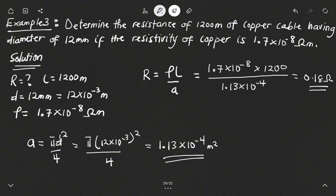Thank you so much for watching. This is how we calculate the resistivity of a wire if we are given the resistance, the length, and the cross-sectional area or the diameter of that particular wire. Thank you once again for watching and I will see you in the next video. Bye-bye.